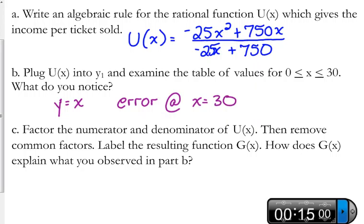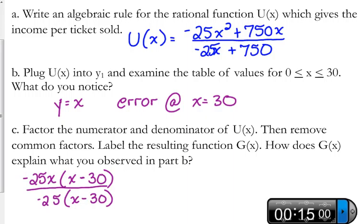So, let's factor the numerator and the denominator. Both of them have GCFs. The numerator has a GCF of negative 25x. When we take that out, we're left with x minus 30. And the bottom has a GCF of just negative 25. Both those terms don't have an x. So, that leaves us with x minus 30. So, what do these numerators and denominators have in common? They've got x minus 30 on the top and on the bottom. They've also got negative 25 on the top and on the bottom.